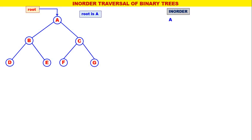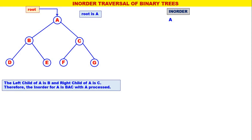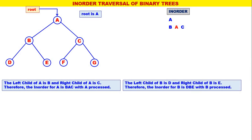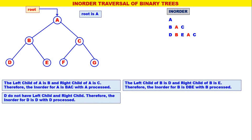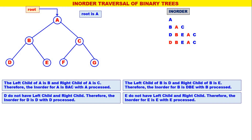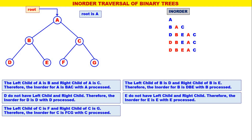Let us consider one more tree. In order, root is A. The left child of A is B and the right child of A is C, therefore the inorder for A is BAC with A processed. Next, the leftmost is B. The left child of B is D and the right child of B is E, therefore the inorder for B is DBE with B processed. Next, D does not have children, so inorder for D is D only. Next, E does not have children, so inorder for E is E only.